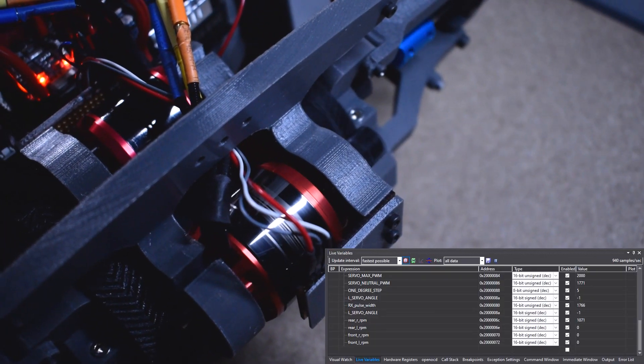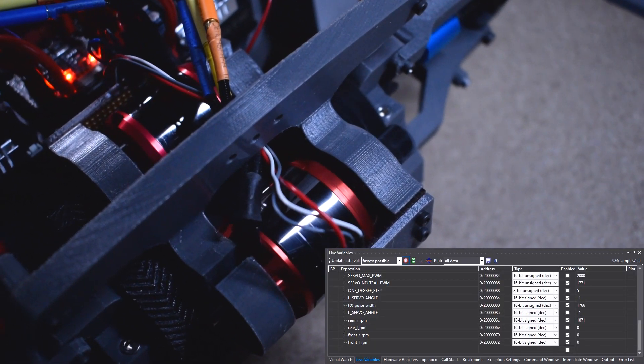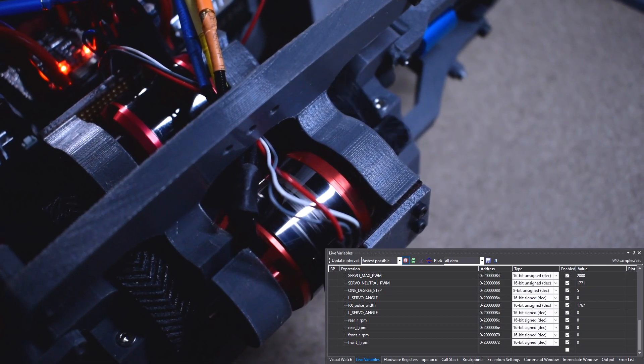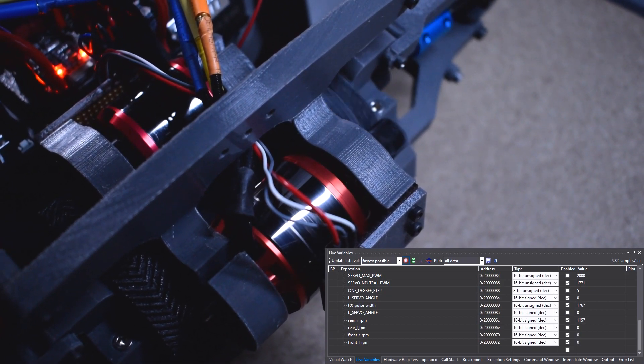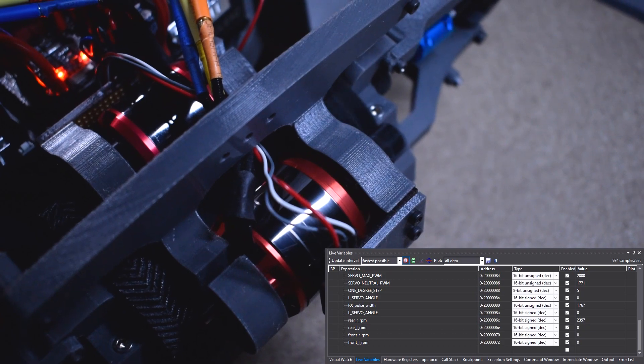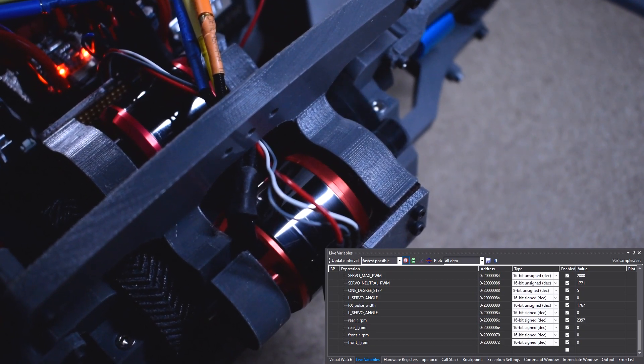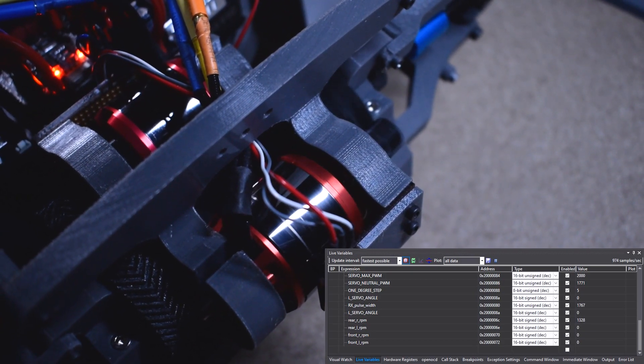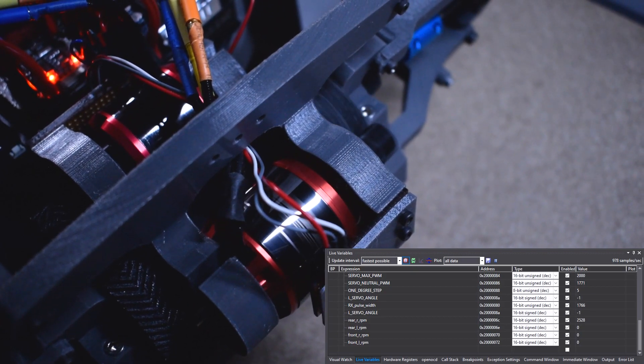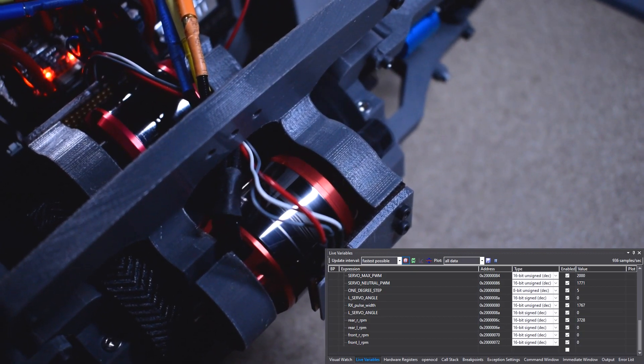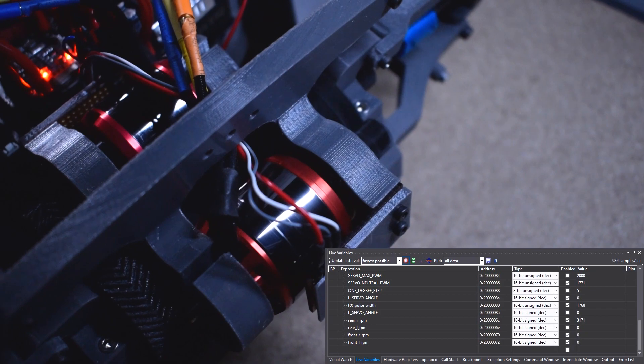To demonstrate this I've shown in the corner here a bunch of live variables that I can view on the PC while the car is running. So in the software what I'm doing is I'm counting the pulses of the magnets and I'm using that to calculate the RPM. So you can see that as I ramp up the throttle that variable rear right RPM is increasing and decreasing accordingly.